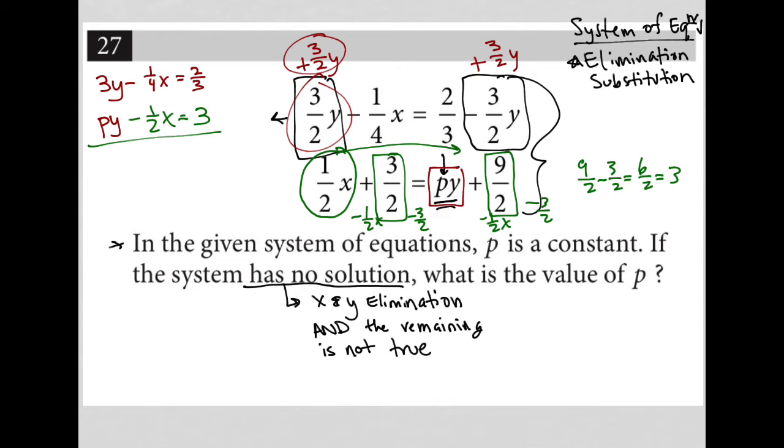So the first rule of a system having no solution is that both X and Y must eliminate. They must both cross out. So how do I get my X term to cross out? I don't know how to get my Y term to cross out because I don't know what p is. But I do know how to get my X term to cross out.